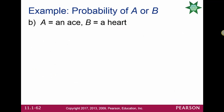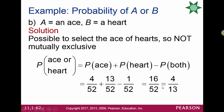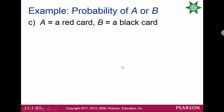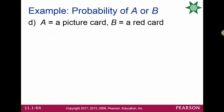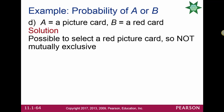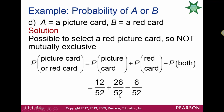The probability of getting an ace or a heart: these are not mutually exclusive, so we use the full formula. Probability of ace is 4/52, probability of heart is 13/52, and there is 1 ace of hearts, so we subtract 1/52: result is 16/52, or 4 out of 13. The probability of a red card or black card: mutually exclusive, probabilities add to 1. The probability of a picture card or red card: not mutually exclusive. Picture cards: 12/52, red cards: 26/52, red picture cards: 6/52. Result: 32/52, or 8 out of 13.